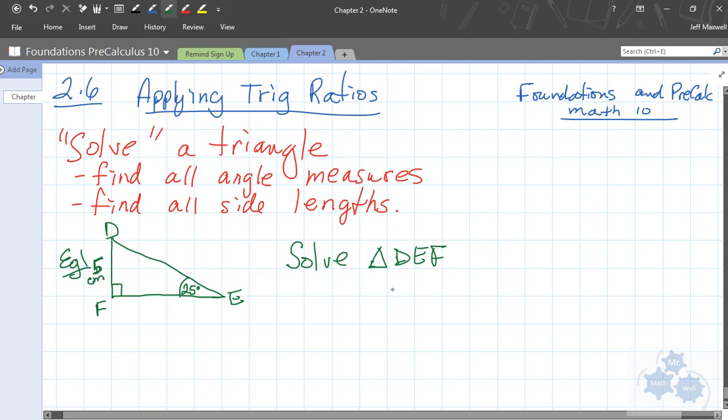All right, so if I write this, that means you need to find all the angle measures and all the side lengths. And you can start wherever you want. Obviously, there are some things you can't do from the beginning. You can't use Pythagoras' theorem right from the very beginning because you're only given one side length.